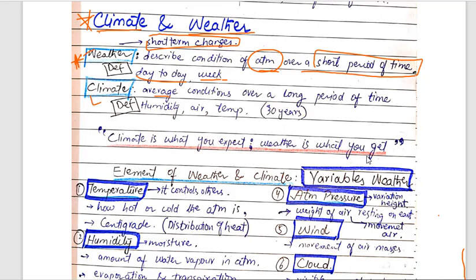What is climate? Climate is average conditions — average conditions over a long period of time. The average of weather changes gives us climate.